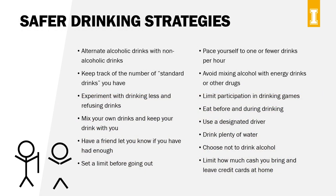So how can we mitigate the risk of alcohol poisoning and other not-so-good outcomes if we choose to drink? Here is a list of safer drinking strategies that U of I students report using to stay safe while drinking. These include alternating alcoholic drinks with non-alcoholic drinks, keeping track of the number of standard drinks you have, making your own drinks and keeping them with you, and more. Consider these strategies for yourself or your friends.